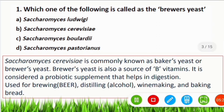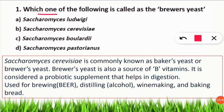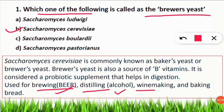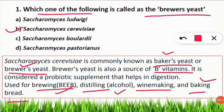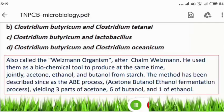Q: Which organism is called brewer's yeast? A: Saccharomyces cerevisiae — known as brewer's yeast because it is used for brewing beer and distilling alcohol, and in winemaking and baking bread (also called baker's yeast). It is a good source of vitamin B, and is considered a probiotic supplement that helps in digestion.